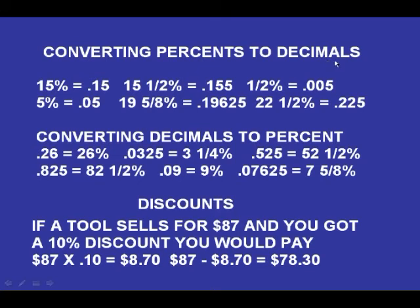Converting percent to decimals: 15 percent equals .15. 15 and a half percent equals .155. 1 half of 1 percent equals .005.